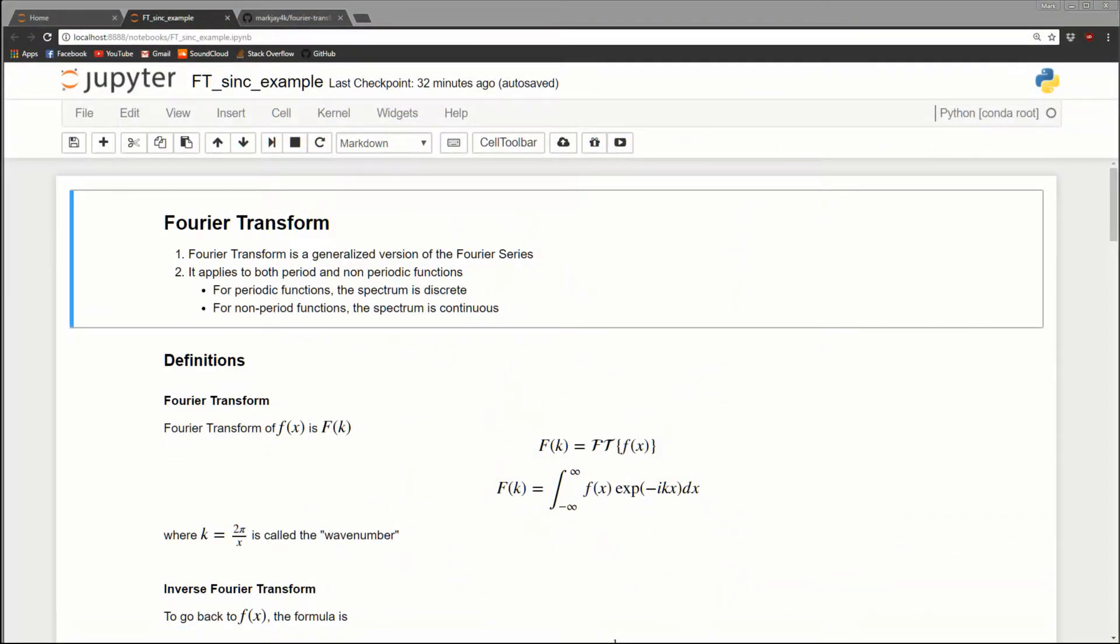Let's jump over to the notebook and I'd like to start by doing a quick recap. We started with the Fourier series and moved to the Fourier transform, and we learned that the Fourier series was a specialized case of the Fourier transform. So Fourier transform is more general.